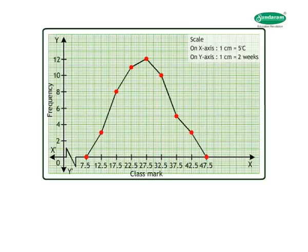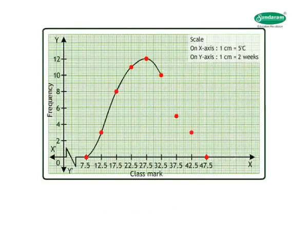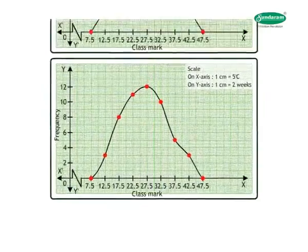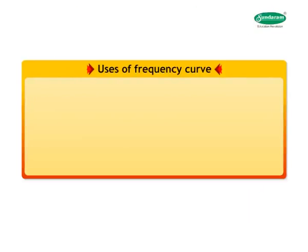In the first figure, we join all successive points including the two additional extreme points by straight lines to get the desired frequency polygon showing distribution of maximum temperature. In the second figure, we join all successive points including the two additional extreme points by a smooth freehand curve to get the desired frequency curve showing distribution of maximum temperature.